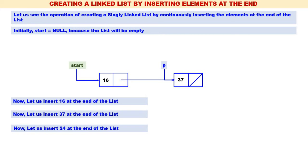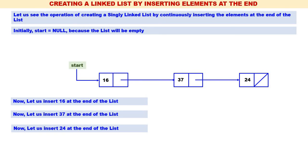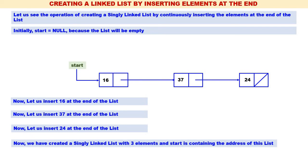Let us insert 24 at the end of the list, so 24 has to be inserted after 37. Create a new node pointed by p. p->info is equal to 24, p->next is equal to null. To connect the node containing 37 with the node containing 24, the address part of 37 should contain the address of the node containing 24. Now we have created a single linked list with three elements, with start containing the address of the first node.